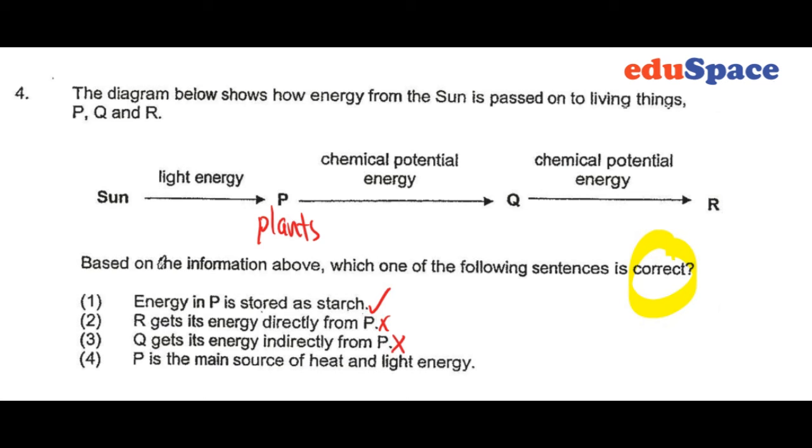And P is the main source of heat and light energy. That is wrong. That should be the sun as well. So in this case, the answer should be number 1.